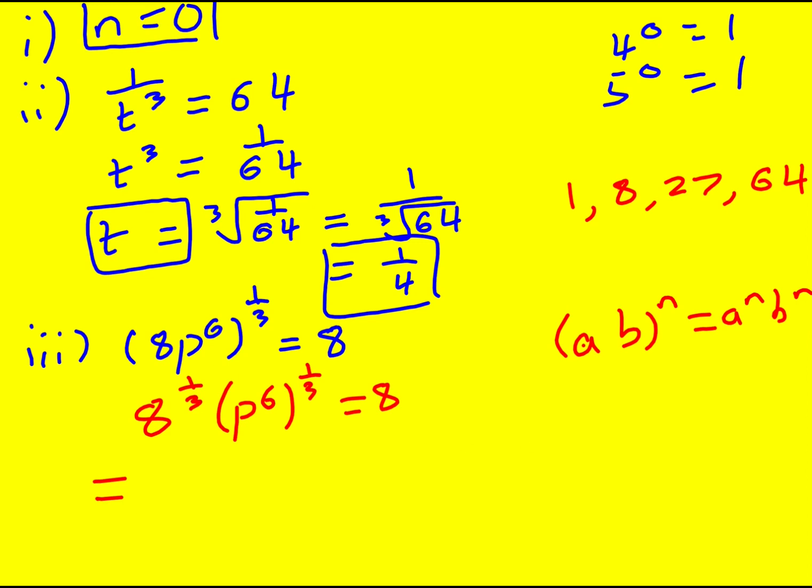8 to the third - this is a fractional indice and it actually means the cube root of 8. So I'm going to get the cube root of 8 times... now I can multiply the powers here, third rule of indices. 6 times a third or 6 divided by 3 is going to give me p squared. And the cube root of 8, like I had up here, is actually 2.